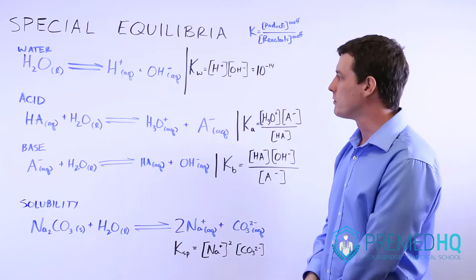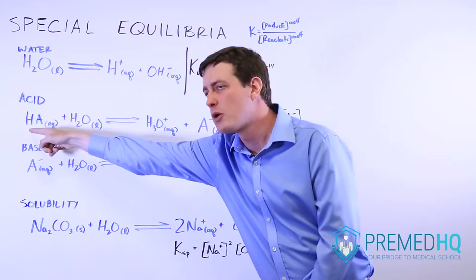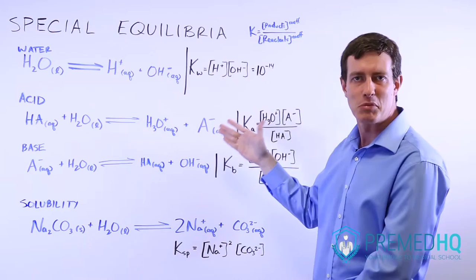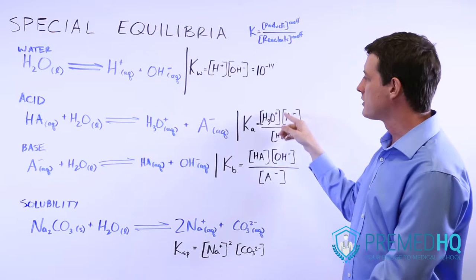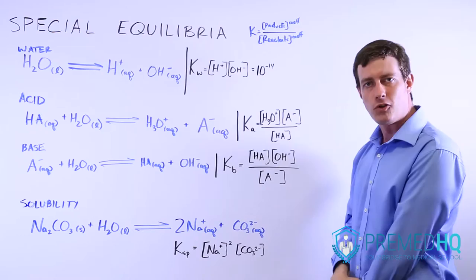With an acid, we have a simple generic acid equation with HA, an aqueous acid which has a proton attached. When put in water, it dissociates into protons or hydronium ions and the conjugate base, represented as A minus. Because we don't use pure liquids in our equilibrium expressions, the Ka value — the acid dissociation constant — will be the concentration of H3O+ times the concentration of A minus, both raised to the first power, divided by the concentration of the acid in its original form.